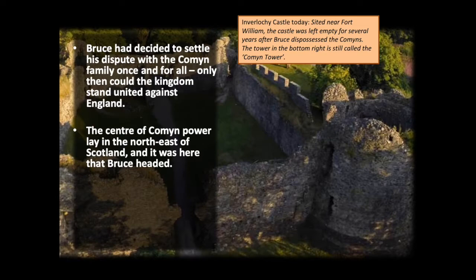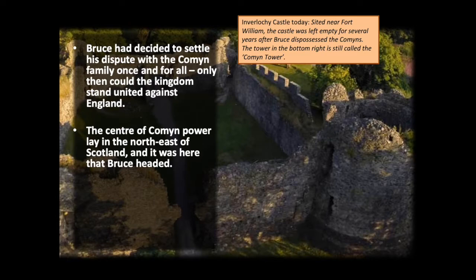Way back when the kingdom of Alba was first formed and became Scotland around the year 900, the two major royal family branches were based near Scone in Perth and in Moray, where the Comyns were. They used to share the crown between them, going back into the early medieval period — one member of the Moray family would have a turn as king, then it would swap to the cousins further south. In the 10th century, this process stopped and the family line based in Moray lost out. Over the centuries, the reigning family dealt with this by periodically crushing their upstart cousins.